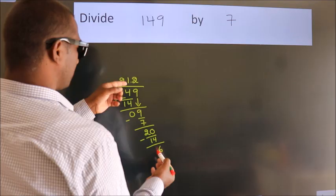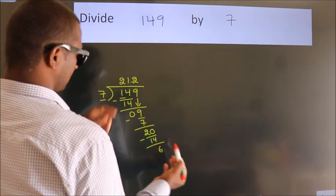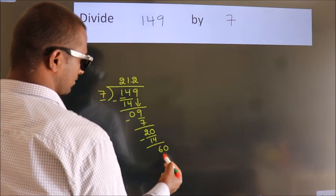After this, we already have the decimal. So directly take 0. So 60.